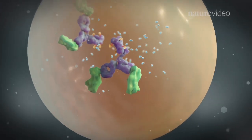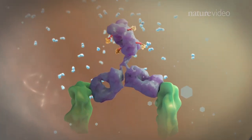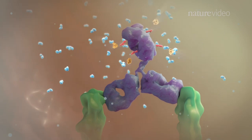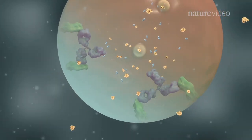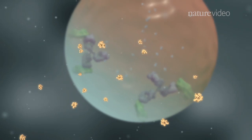Once inside the cell, conjugate linkers may be broken, for example, by lysosomal enzymes. Active drug then enters the cytoplasm, inflicting lethal damage.